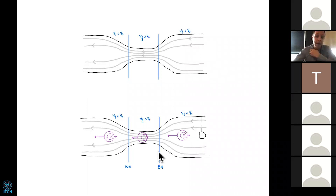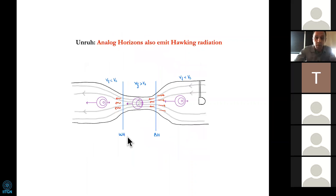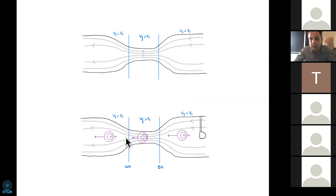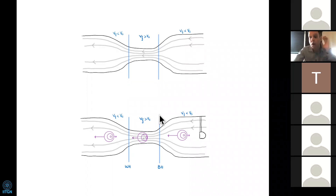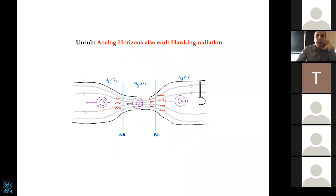For the same reason, this other barrier — where the speed of the fluid again equals the speed of sound — is such that waves can only propagate to the left. So waves cannot enter this barrier, and this acts like the time inverse of a black hole: this is a white hole. Here you can enter but nothing can exit — that is the black hole horizon. Here you can exit but nothing can enter — that is the white hole horizon.